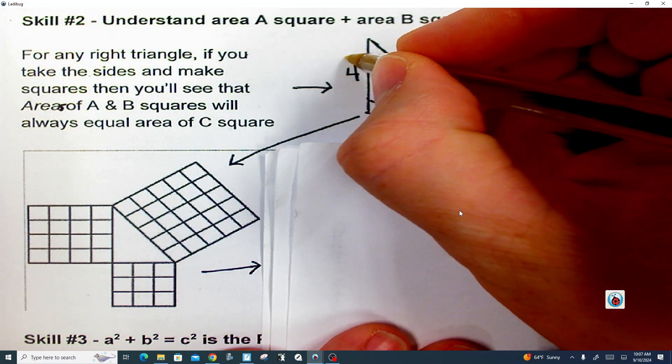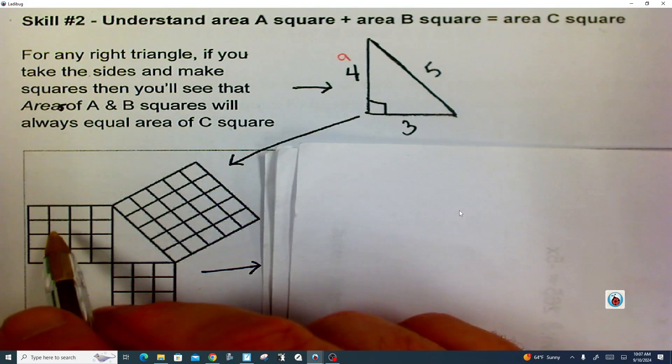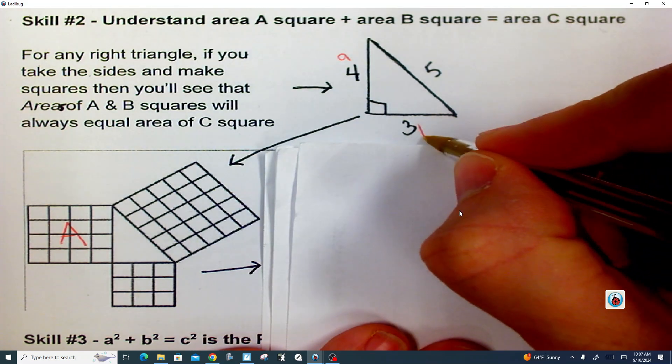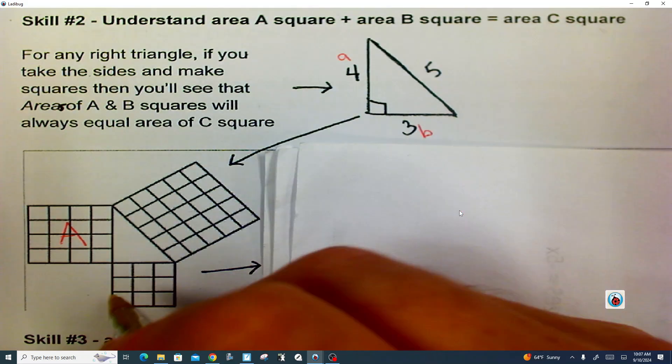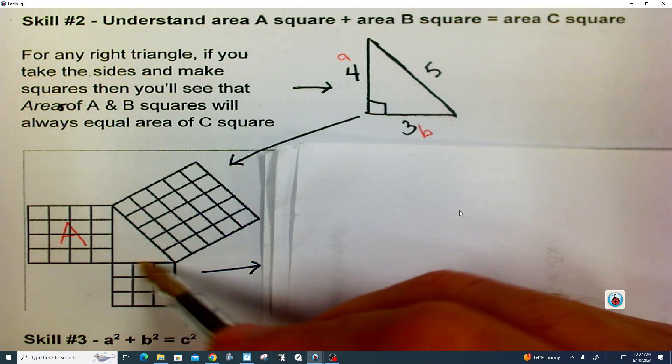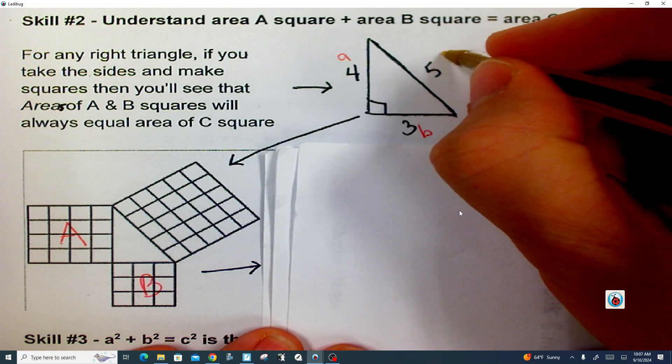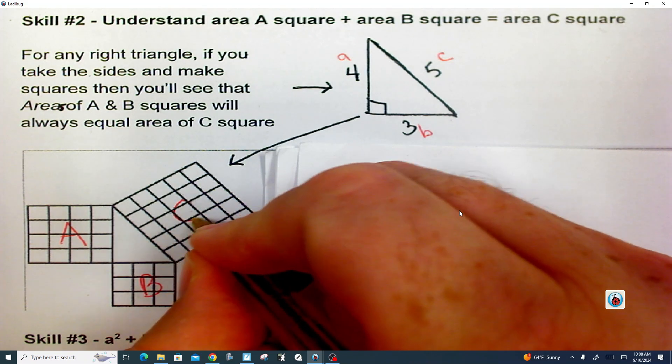Now, if I call this A, then this would be square A. If I call this one B, then this 3 by 3 square that we're making right here on the 3 side, this would be square B, and then of course this would be C right here, and this would be square C.